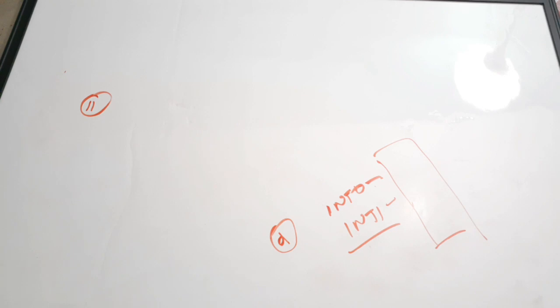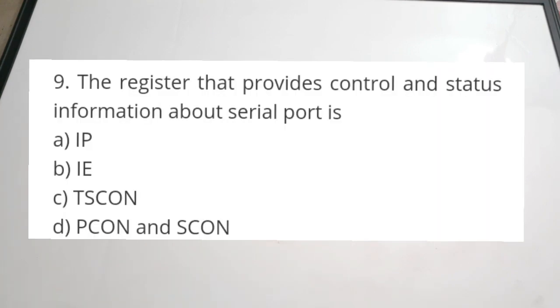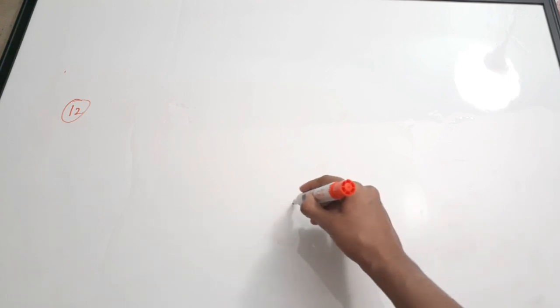Question number twelve: the register that provides control and status information about the serial port is — A) IP (interrupt priority register), B) IE (interrupt enable register), C) SCON, D) PCON and SCON register. The correct answer is D, PCON and SCON. The power control (PCON) and serial communication control (SCON) registers are the two registers used for controlling serial port communication.